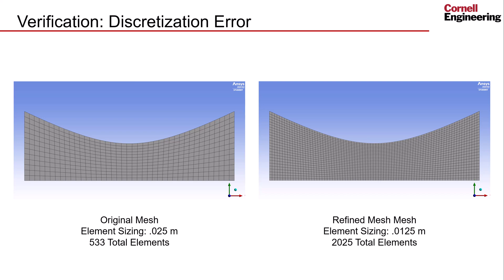Here's a comparison of the original mesh with an example of a refined mesh. By simply halving the element sizing, the mesh contains nearly quadruple the elements. This will reduce the discretization error significantly and can be used to verify if the solution is approximately independent of mesh size.